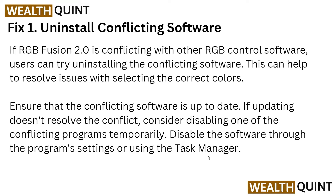The first solution is to uninstall conflicting software. RGB Fusion 2.0 may be conflicting with other RGB control software, so users can try uninstalling the conflicting software. This can help resolve issues with color selection. Ensure that the conflicting software is up to date — if updating doesn't resolve the conflict, consider disabling one of the conflicting software programs temporarily. You can disable the software through the program settings or by using the Task Manager.